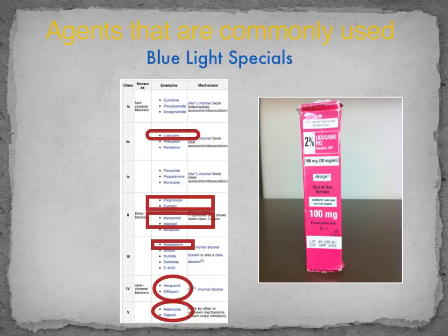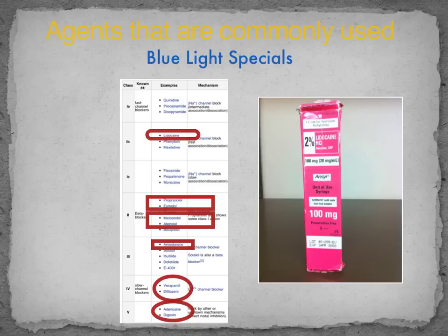Calcium channel blockers — verapamil and diltiazem (Cardizem) — diltiazem is given IV in the ICU to treat tachydysrhythmias as a weight-based bolus followed by an infusion. Adenosine blocks the AV node — administered for a very rapid heart rhythm, it blocks conduction through the AV node and you may see a high-grade heart block or even asystole for several seconds, then hopefully normal pacemakers kick in and restore normal rhythm. It's very dramatic to see adenosine used for the first time.